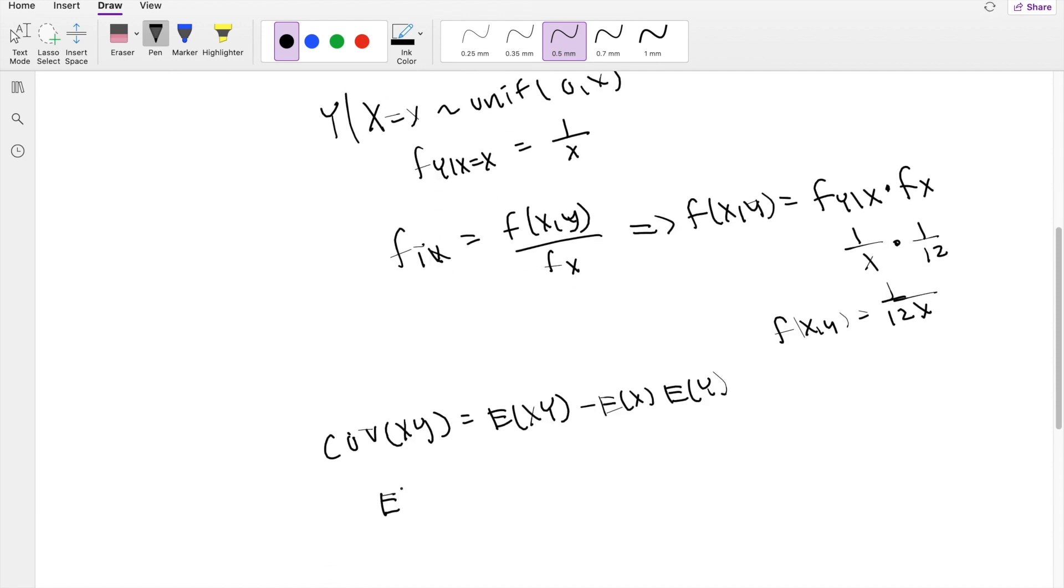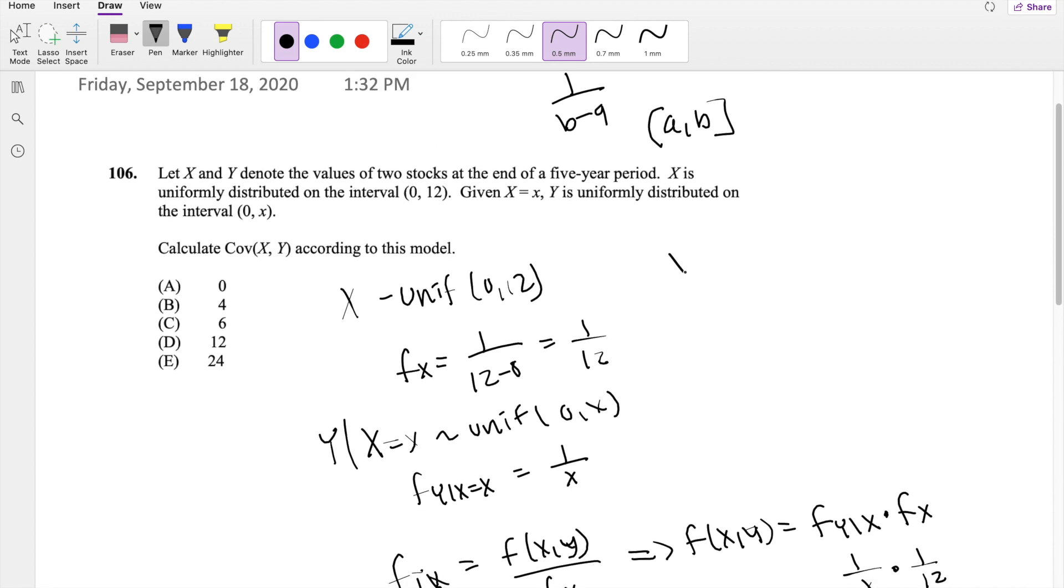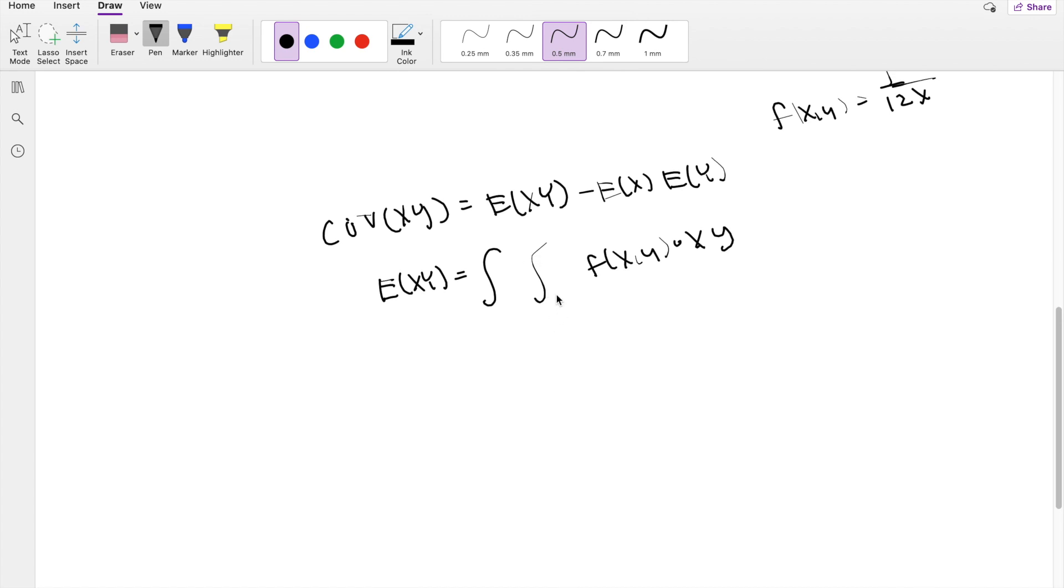Alright, so the expectation of XY is just equal to, whatever the x and y range may be, we're just integrating f of X comma Y times x times y. And so what would our range be? Well, we know x exists on 0 to 12, and we know y exists on 0 to x. So plugging those in, we get 0 to x and 0 to 12 of dy dx.